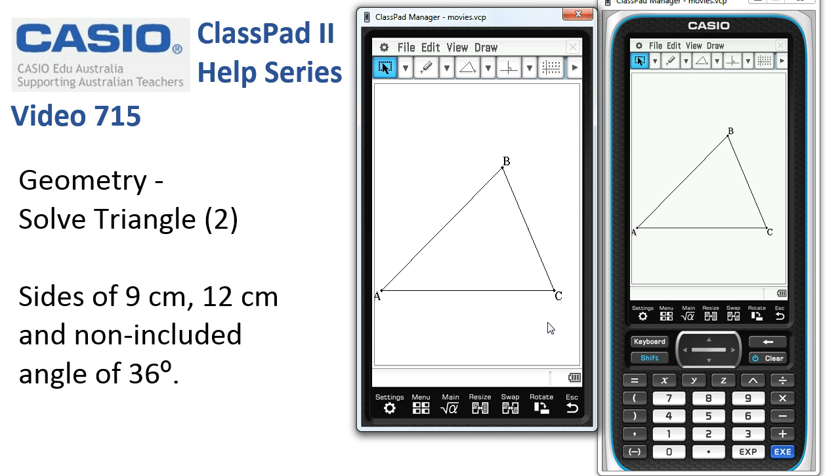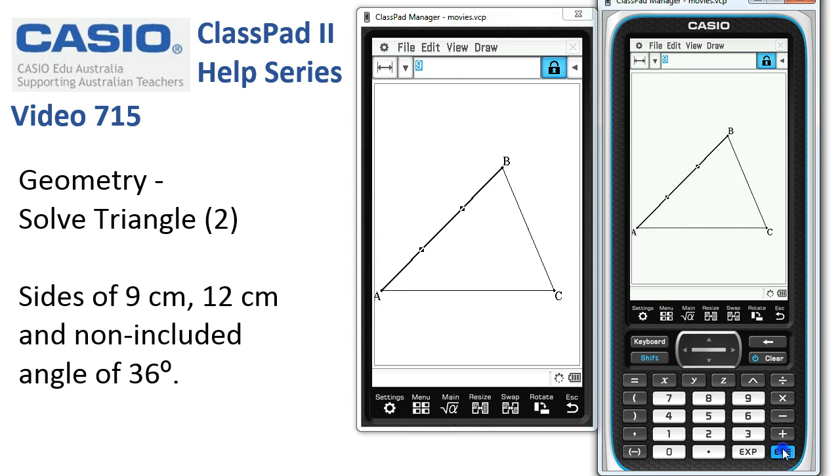Now the sides are 9 and 12 and non-included angle of 36, so we'll tap over to the measurement toolbar and I'll start by selecting the side AB, here it is, and this one's going to be the 9 cm. So over here I tap on 9 and lock it in by tapping execute and deselect.